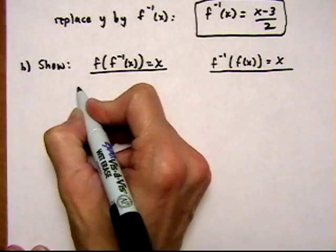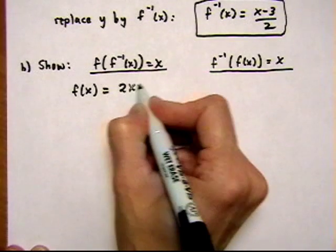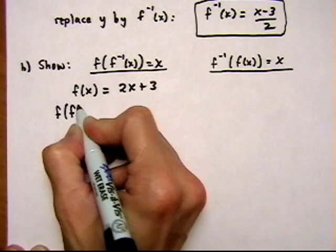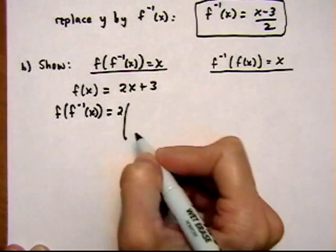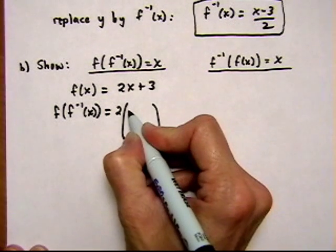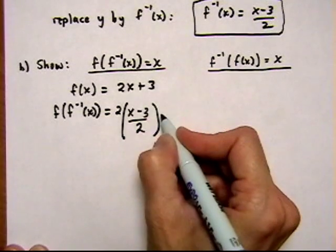Let's start with f(x). f(x) is equal to 2x plus 3. And now we want to find f of f inverse of x. And that's equal to 2 times, and we want to put in the inverse function here instead of x. So we have x minus 3 over 2. Bring down the plus 3.